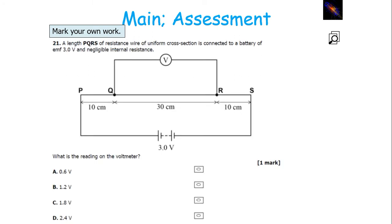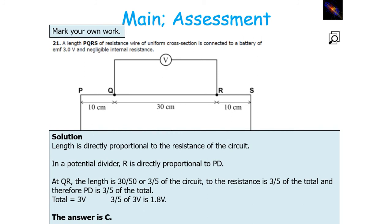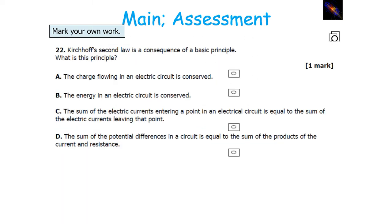Length is directly proportional to the resistance of a circuit, and in a potential divider, resistance is directly proportional to potential difference. With QR, the length is 30 over 50, or 3 fifths of the circuit, so the resistance is 3 fifths of the total, so the PD is 3 fifths of the total. The total is 3 volts, so 3 fifths of 3 volts is 1.8 volts.